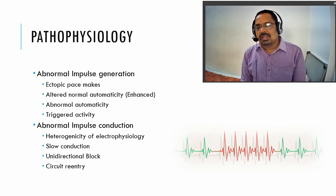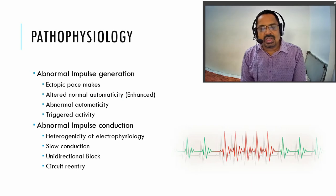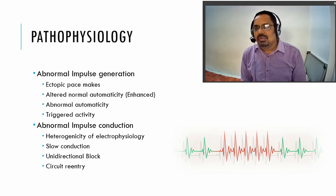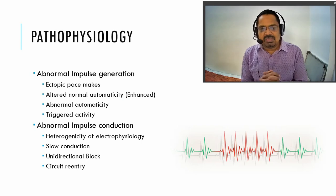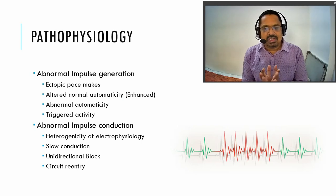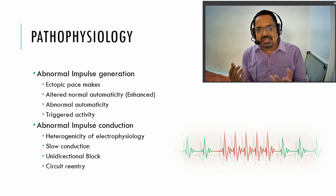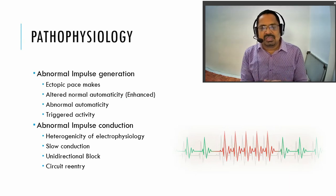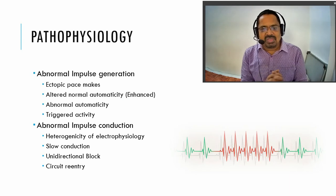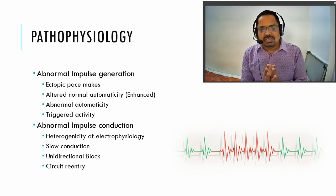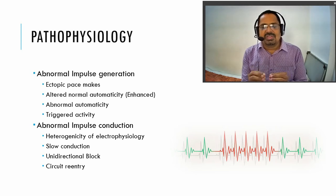Whenever arrhythmia occurs, two things can happen. In normal pacemaking activity, the SA node generates the impulse, then the AV node, bundle of His, and Purkinje fibers conduct and transmit the impulse. So there are two events in the conducting system: impulse generation and impulse conduction. Whenever arrhythmia occurs, there is an abnormality in either impulse generation or impulse conduction.